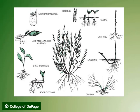This figure shows various vegetative or asexual propagation methods, including stem cuttings, root cuttings, leaf and leaf bud cuttings, layering, grafting, budding, special structures, micropropagation, as well as division.